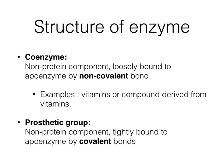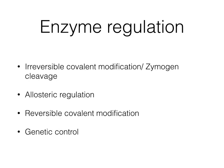Let's move on now to enzyme regulation. I'll be presenting four mechanisms: zymogen cleavage, allosteric regulation, reversible covalent modification, and genetic control. The first three are involved in short-term regulation of an enzyme and produce immediate effect. The last one — genetic control — is for long-term regulation of enzyme activities.